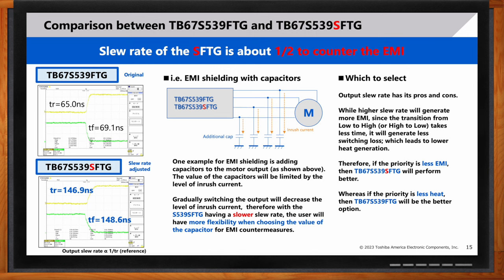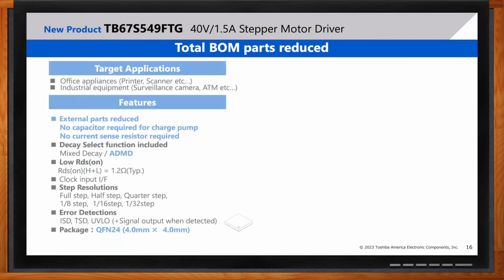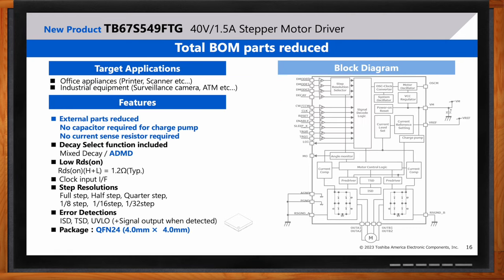Another new product with these BOM reduction benefits is the TB67S549. This part has slightly lower drive at 1.5 amps than the previous parts, but it comes in a 4x4 millimeter package. So, the combination of fewer external components and the small package size make this part ideal for applications with aggressive area constraints.